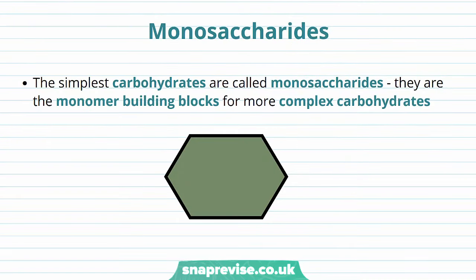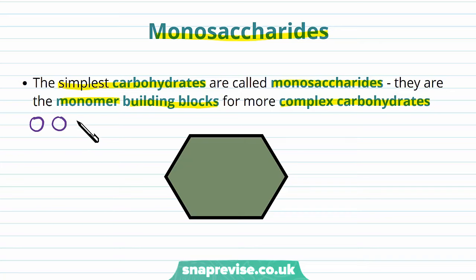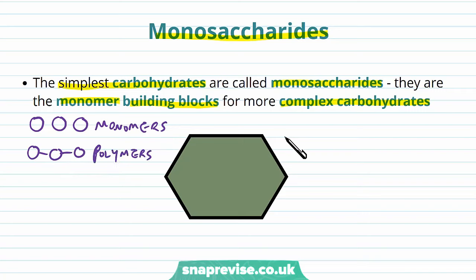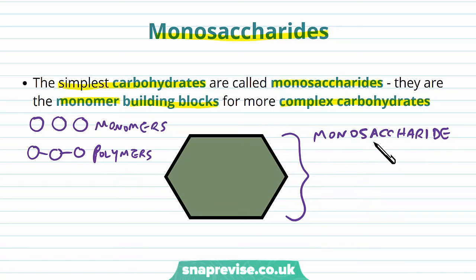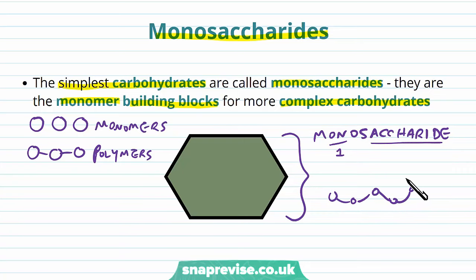The simplest carbohydrates are called monosaccharides, and they're basically the monomers or building blocks for more complex carbohydrates. When we talk about biological molecules, we have individual units known as monomers, and monomers joined together into chains become polymers. One of these units for a carbohydrate is known as a monosaccharide, with 'saccharide' referring to sugar and 'mono' referring to one. Many of these can join up to form more complex carbohydrates.